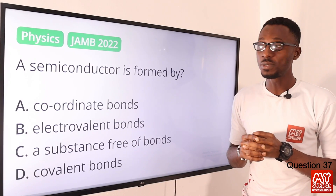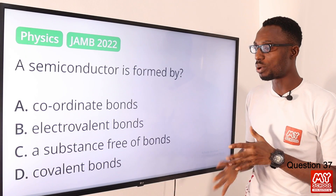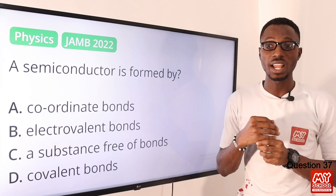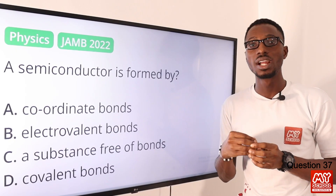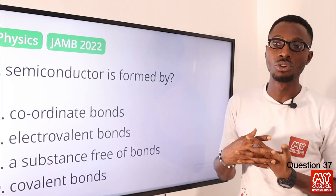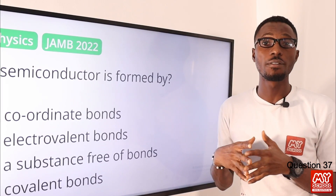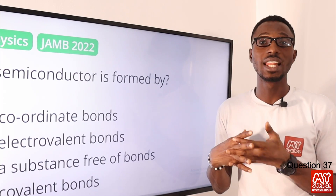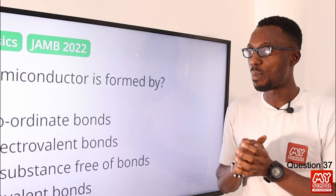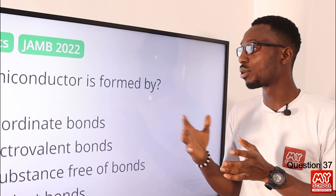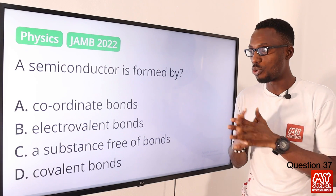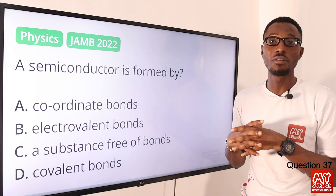Question 37. A semiconductor is formed by covalent bonds. Typical examples include silicon and germanium, found in group 4 of the periodic table. Even though they have 4 valence electrons, these electrons are not really free to move. Semiconductors are formed by covalent bonds — the correct option is option D.